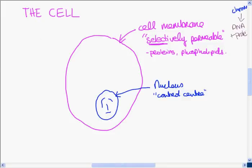The next part of the cell is called the mitochondrion. Plural is mitochondria. The mitochondrion is called the powerhouse of the cell. The reason it's called the powerhouse is because it is where respiration takes place.